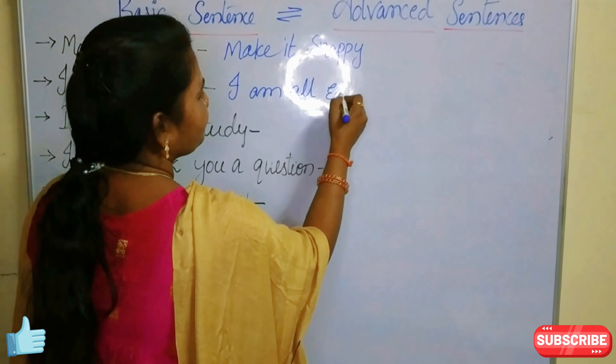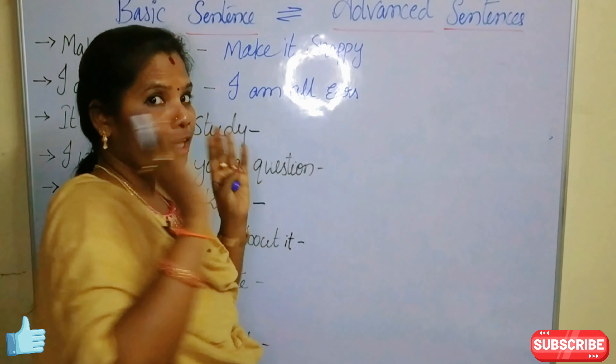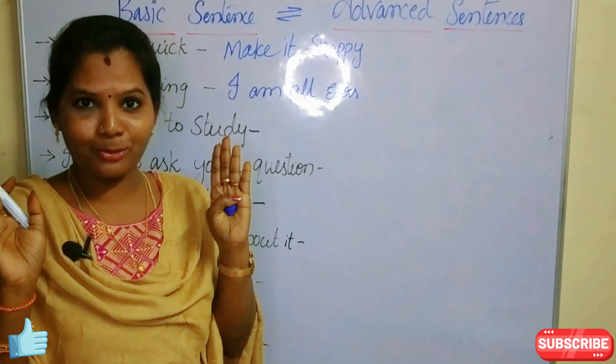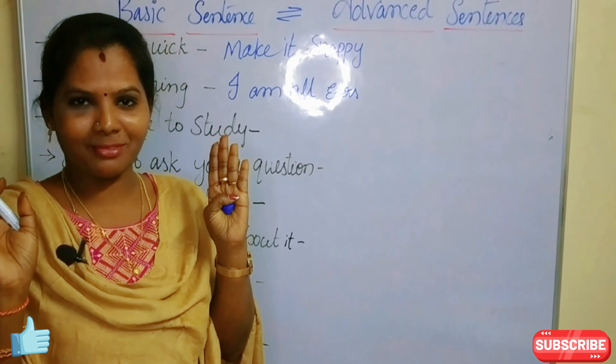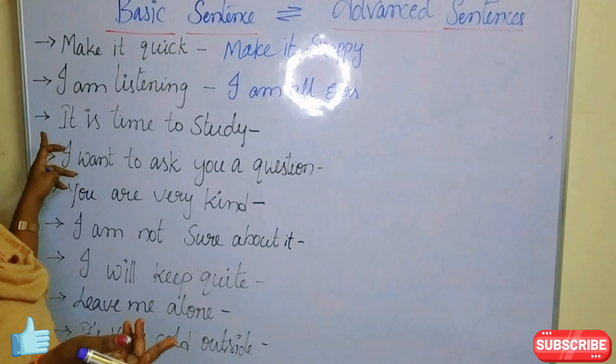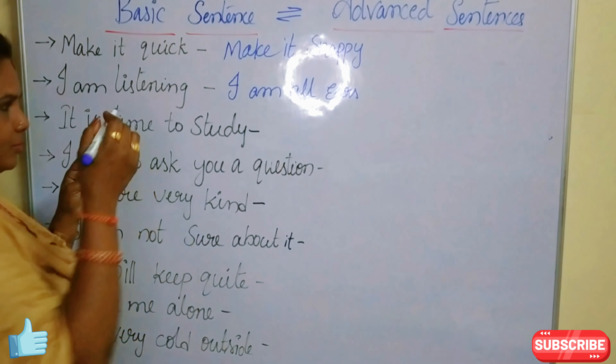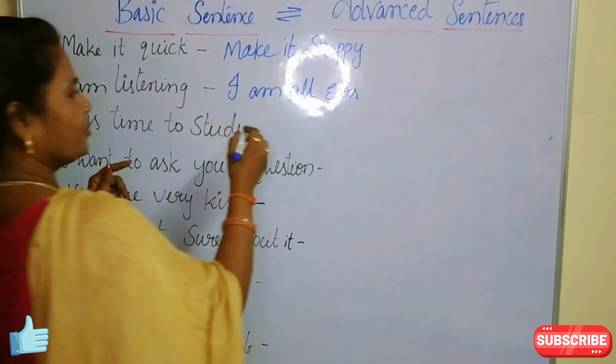Next: the basic sentence is 'I am listening.' The advanced sentence for that is 'I am all ears.' All ears — meaning you are fully attentive with all your concentration. Whenever you want to say you are listening, use the advanced phrase 'I am all ears.'